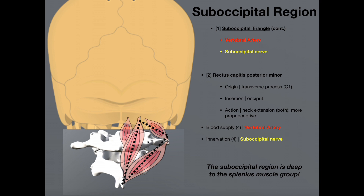Within the suboccipital triangle, we see a component of the vertebral artery as it's ascending upward. The other structure inside the suboccipital triangle is the suboccipital nerve. It's important to note that the suboccipital nerve is actually the nerve supply to all four of these muscles, including the rectus capitis posterior minor. So the suboccipital nerve runs through here and supplies innervation to all four muscles. Also, the blood supply to all four muscles comes from branches of the vertebral artery.